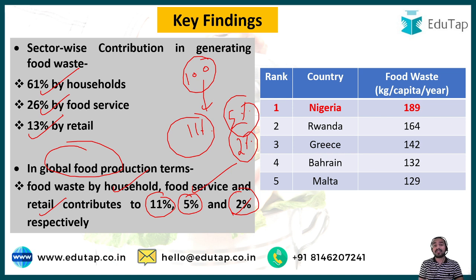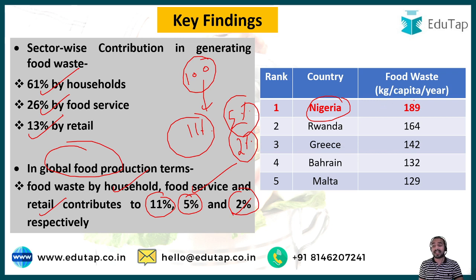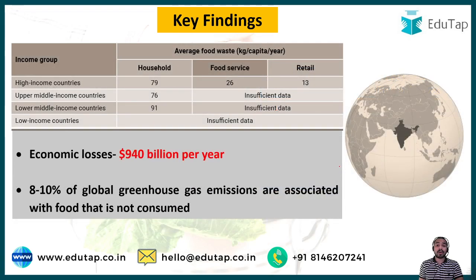Among the top five nations with the highest food waste generation, Nigeria has the worst condition, generating 189 kg per capita per year of food waste. This is followed by Rwanda, Greece, Bahrain, and Malta.